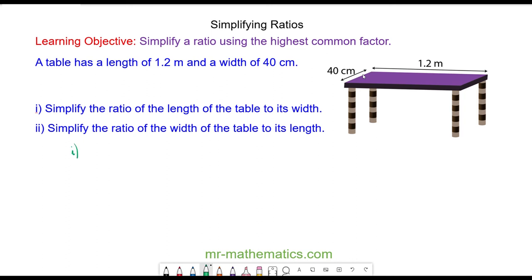For question 1, we have the length, which is 1.2 meters, which I'm going to convert to centimeters. So 1.2 meters multiplied by 100 is 120 centimeters. We have our length to the width of 120 to 40. We can simplify by dividing by 40, which is the highest common factor, so we have 3 to 1.